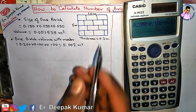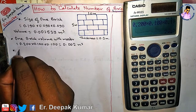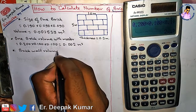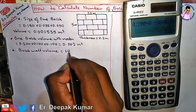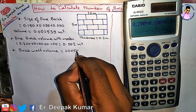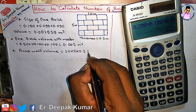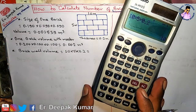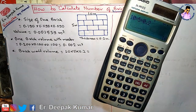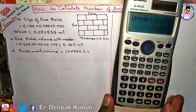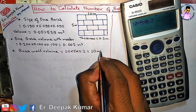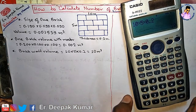Now we calculate the volume of the wall. The volume of the brick wall equals 10 meter × 5 meter × 0.2 meter, which gives us 10 cubic meter.